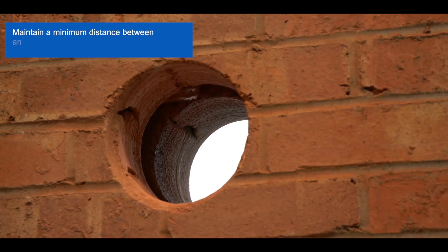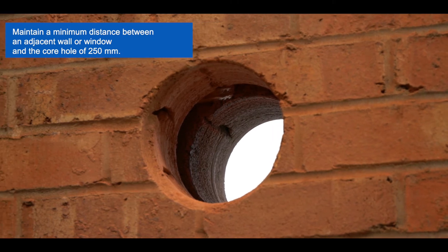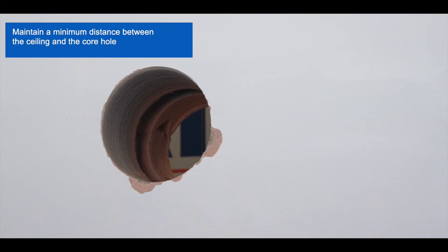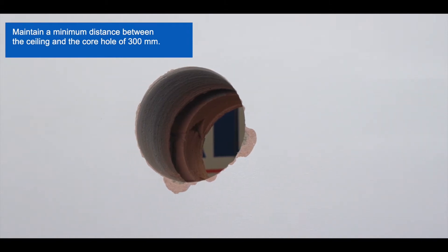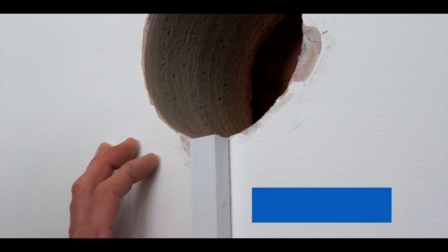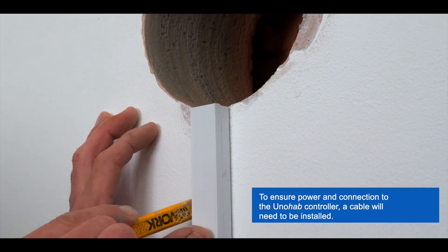Remember to maintain a minimum distance of 250 millimeters between an adjacent wall or window and the core hole. Also maintain a minimum distance of 300 millimeters between the ceiling and the core hole.